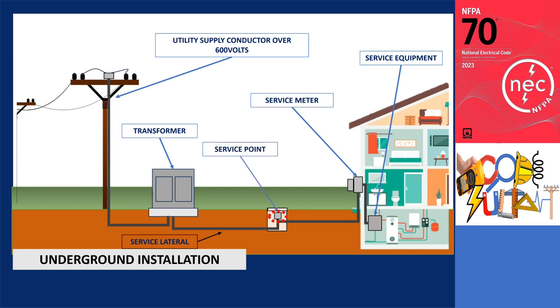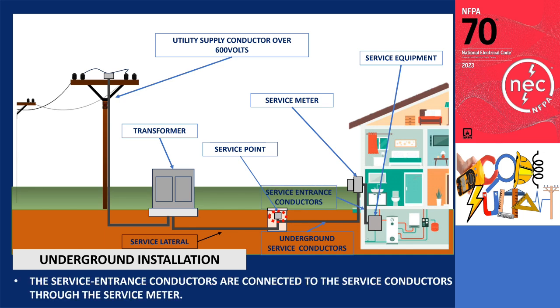From there, the next step is the transition to the underground service conductors, which are then terminated at the service meter. Additionally, the service entrance conductors are connected to the service conductors through the service meter up to the service equipment.